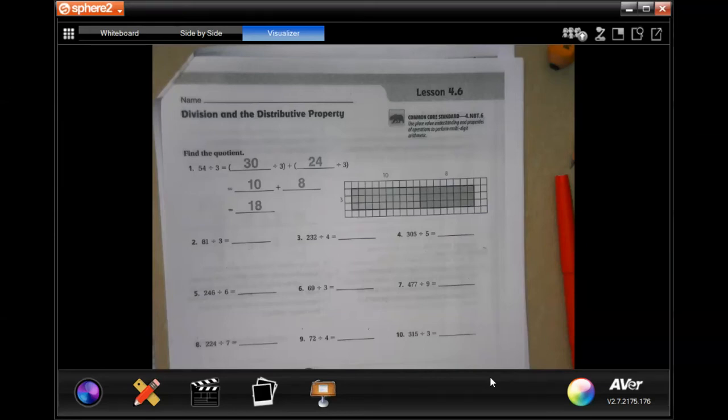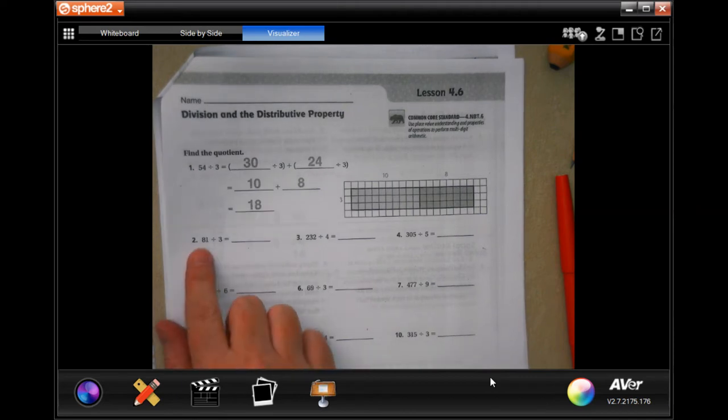Hey guys, welcome to fourth grade, chapter four, lesson six. We're going to go ahead and get started with number two. So it wants us to break up the numbers into compatible numbers.